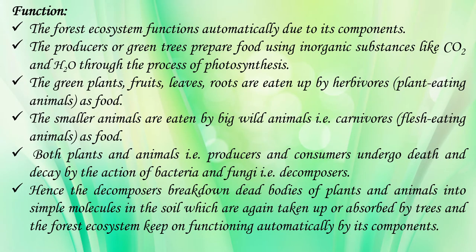The third important component of the living component is decomposers. Decomposers include different types of bacteria and fungi in the forest ecosystem. The structure of the forest ecosystem is clear — each forest ecosystem has a biotic and abiotic component. Now, how does a forest ecosystem work or function? The forest ecosystem functions automatically due to its abiotic and biotic components. First of all, producers or the green trees prepare food using simple inorganic compounds like carbon dioxide and water through the process of photosynthesis.